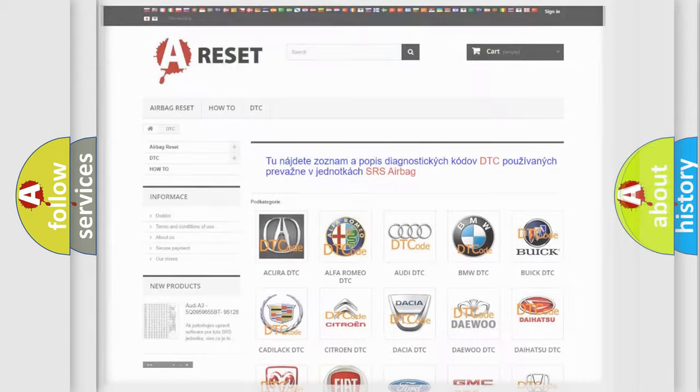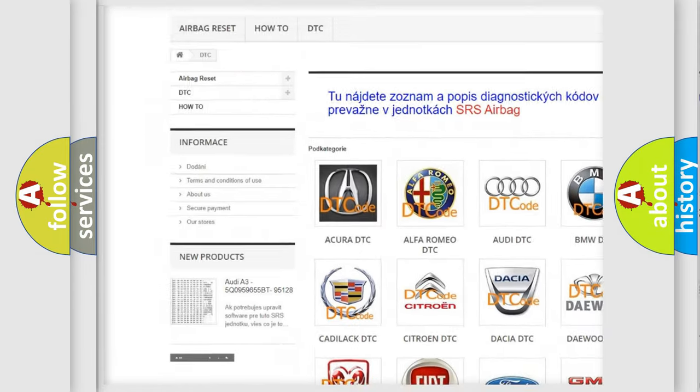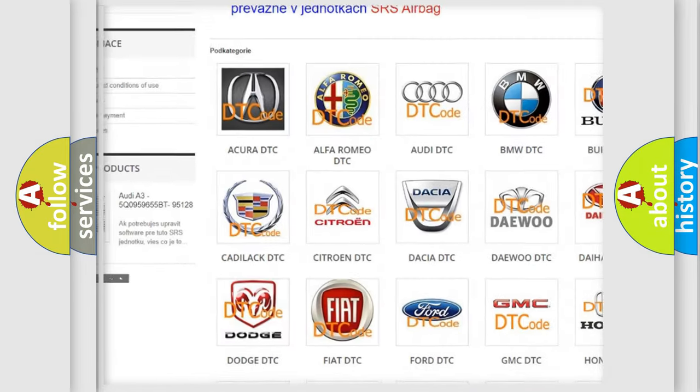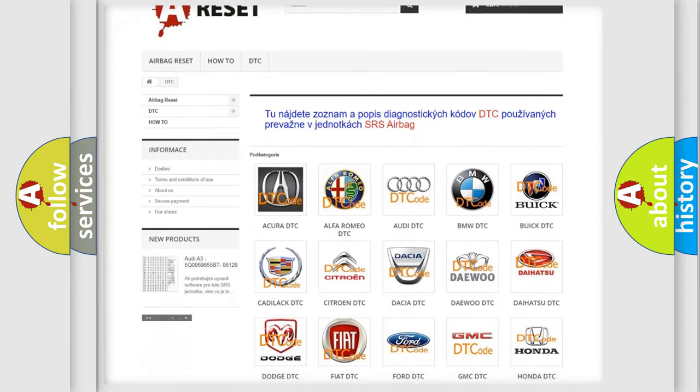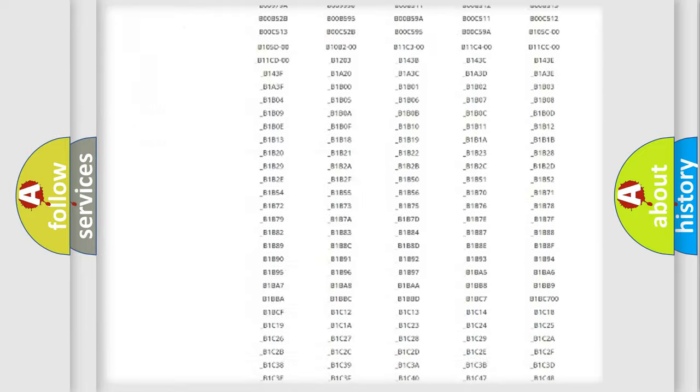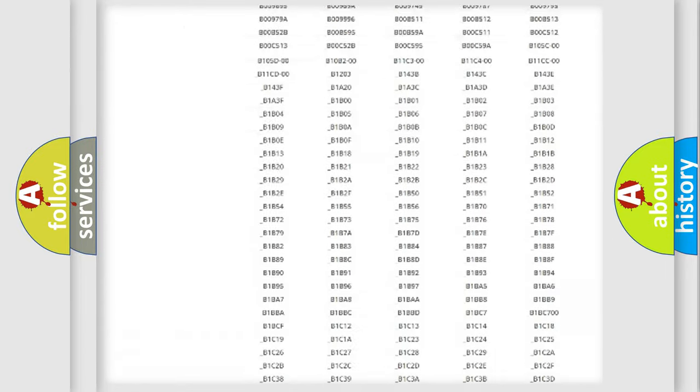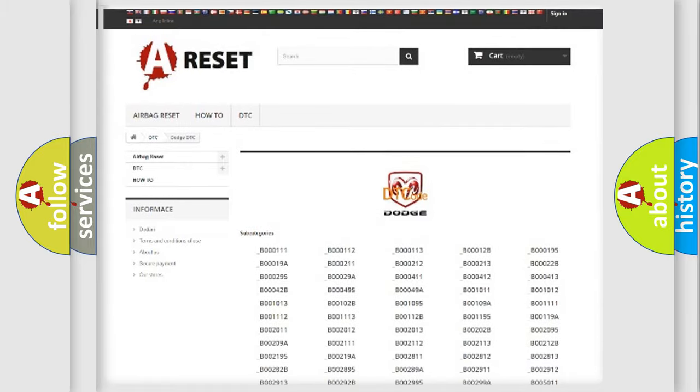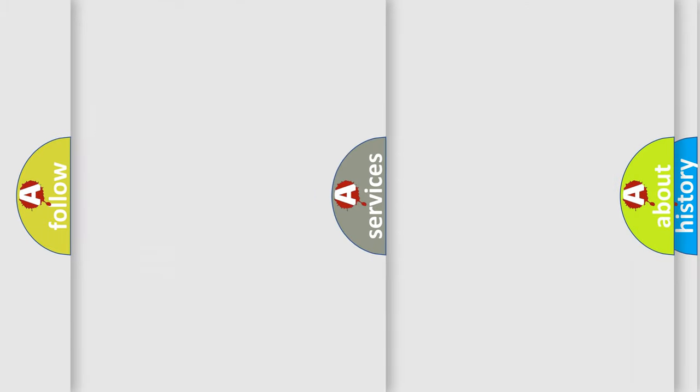Our website airbagreset.sk produces useful videos for you. You do not have to go through the OBD2 protocol anymore to know how to troubleshoot any car breakdown. You will find all the diagnostic codes that can be diagnosed in Dodge vehicles, and many other useful things.